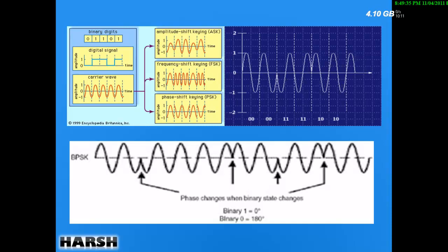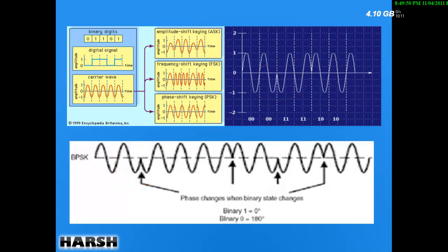Here are basic comparison diagrams showing Amplitude Shift Keying, PSK, and FSK. In PSK you can see a 180 degree phase shift whenever there is a change from 0 to 1 or 1 to 0. In Frequency Shift Keying there is a change in frequency, and in Amplitude Shift Keying there is a change in amplitude for transitions between 1 and 0.